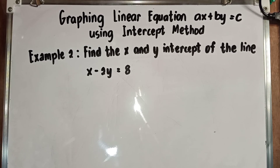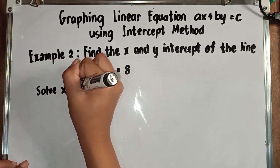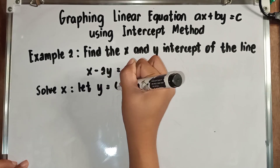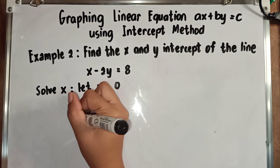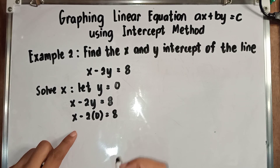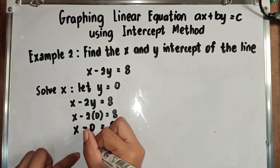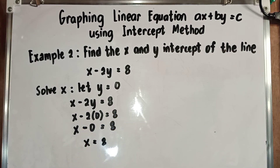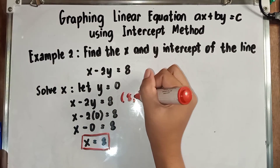Let's have our second example. We need to find the X and Y intercept of the line X minus 2Y is equal to 8, and afterwards we will graph once we locate the two ordered pairs. What we are going to do first is solve for the X intercept — solve for X and let Y equal to 0. Copy the equation: X minus 2Y is equal to 8. Let Y equal to 0: X minus 2 times 0 is equal to 8. Bring down X minus 0 is equal to 8, so X is equal to 8. We already found X which is 8. Our first ordered pair is X is 8 and Y is 0.